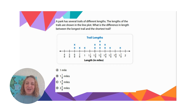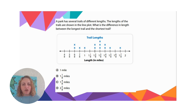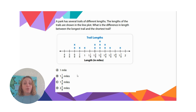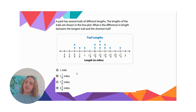The lengths of the trails are shown in the line plot. What is the difference in length between the longest trail and the shortest trail? Remember, 'difference' means we are going to subtract. So we're going to subtract the longest trail from the shortest trail — that's one and seven eighths minus six eighths. Go ahead and pause right now and answer the question.